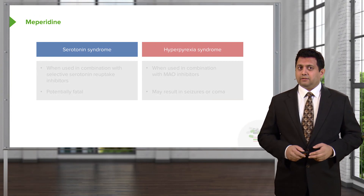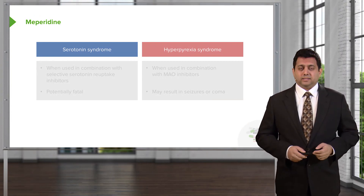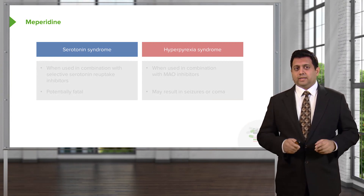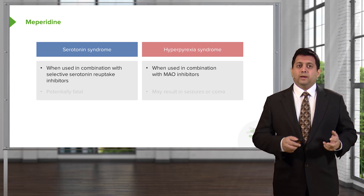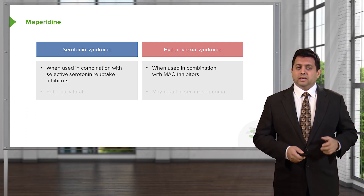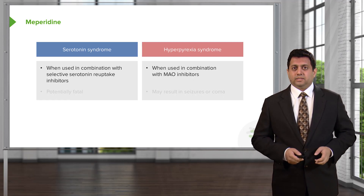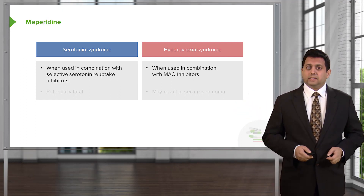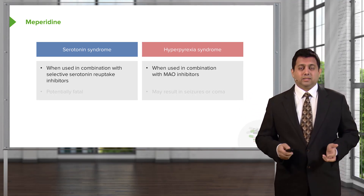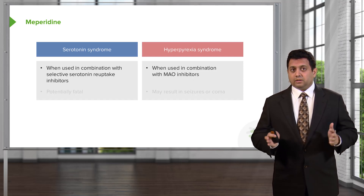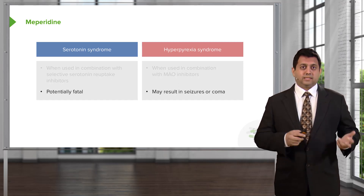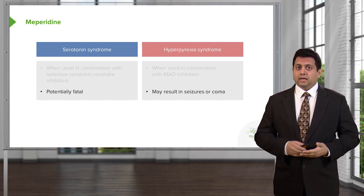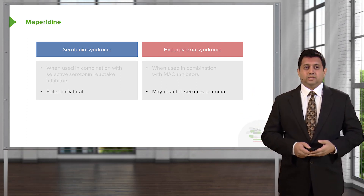Let's talk about meperidine and serotonin syndrome and hyperpyrexia syndrome. Remember that serotonin syndrome can occur with meperidine when used in combination with SSRIs — patients who are on selective serotonin reuptake inhibitors and meperidine can develop serotonin syndrome. With respect to hyperpyrexia syndrome, that occurs when meperidine is used in combination with monoamine oxidase inhibitors. Very similar symptom complexes but very different causes. Remember that serotonin syndrome is potentially fatal, and hyperpyrexia may result in seizures or a coma, so meperidine should be used with caution in these patients.